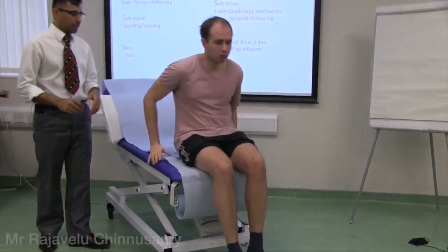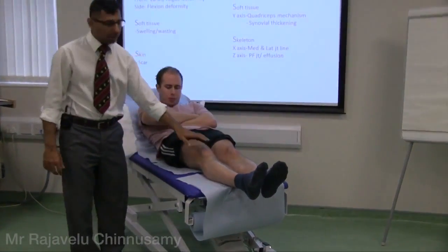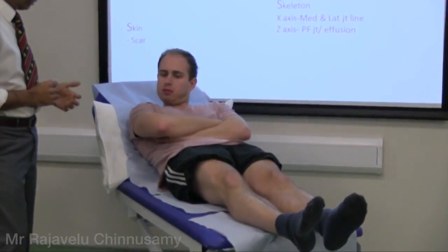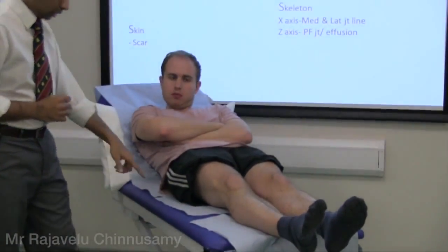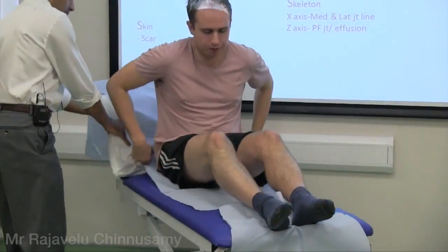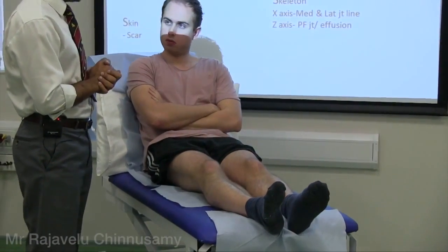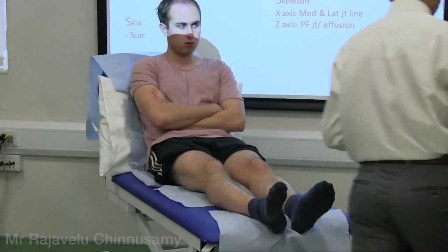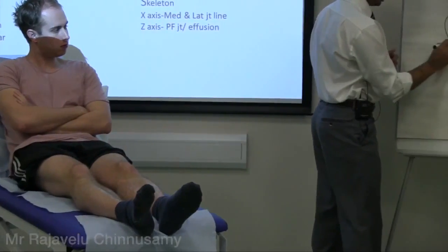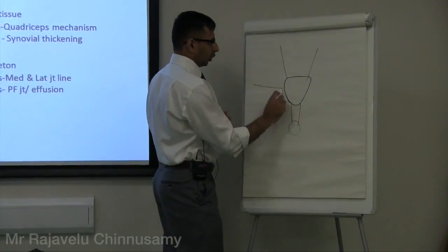Now feel — can you lie down for me please? I am coming to the right side for convenience. Make the patient comfortable — not a straight flat bed, but with some support, whereas hip examination is on a straight couch without softness. Can you come up a little bit? Are you comfortable? Good. The easy way to remember palpation is x-axis and y-axis. The y-axis is the quadriceps mechanism: patella, quadriceps tendon, patellar tendon, and tibial tuberosity.